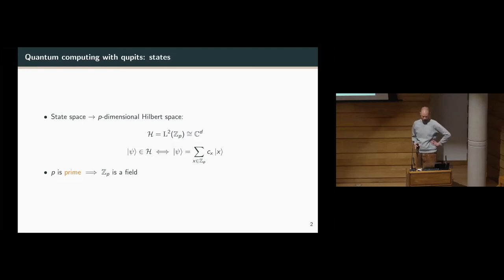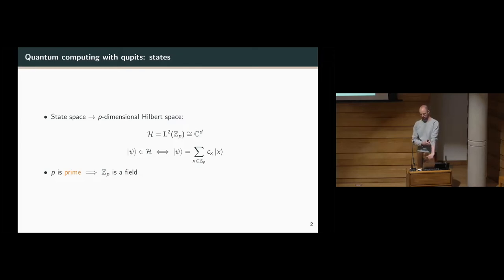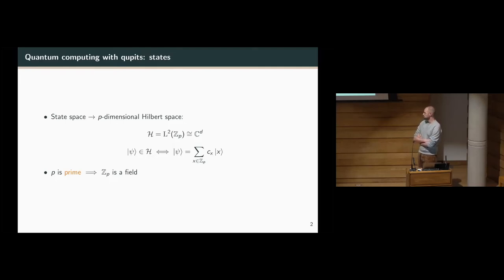In this article we impose always that p should be a prime number, and there are a number of implications of this which are not entirely clear in this talk, although it is important. At the root of all of this is that it makes the group of arithmetic modulo p into a field with the usual operations.